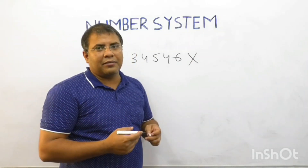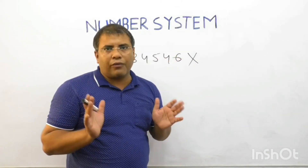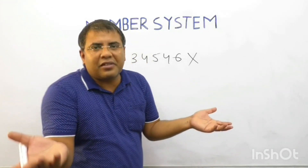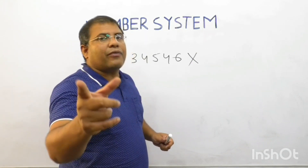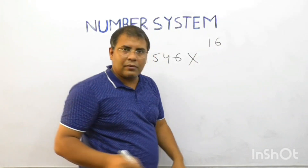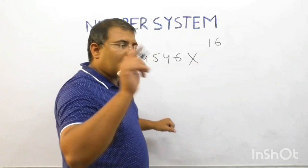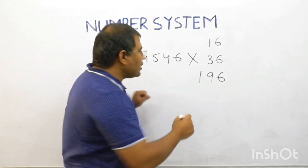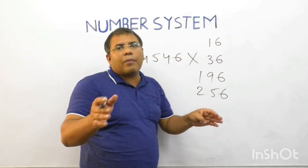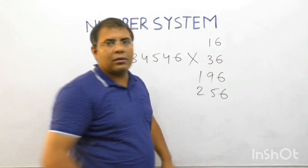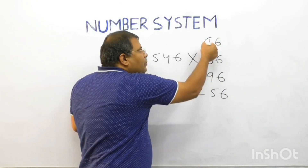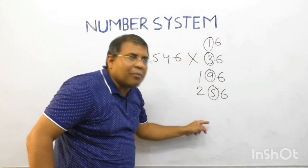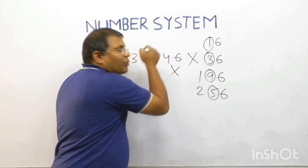Number system is something that requires observation — you have to play with numbers to master it. Let's observe: numbers which are perfect squares and end with 6 include 16, 36, 196, and 256. The key observation is that in all perfect squares ending with 6, the second-to-last digit is always odd. In 34546, that digit is 4 — an even number — so it's not a perfect square.